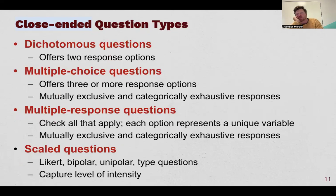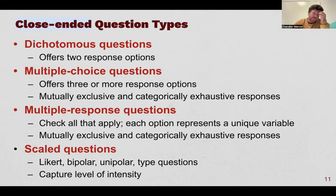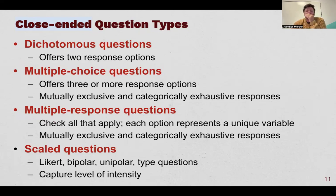There are four big and popular types of closed-ended questions. We have dichotomous questions — offering two response options, also called binary. Then multiple choice questions where there are three or more alternatives; in a multiple choice question they are mutually exclusive and should be categorically exhaustive of all the responses. Then there are multiple response questions, also known as select all that apply — each option represents a unique variable, and each selection is essentially a dichotomous question.